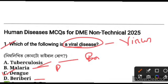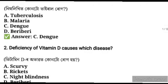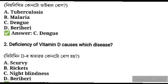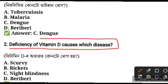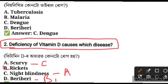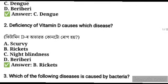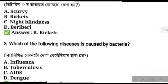The next question is about Vitamin D. Vitamin D deficiency causes which diseases? Night blindness is caused by Vitamin A. Rickets is caused by Vitamin D. Vitamin D is also called sunshine vitamin.